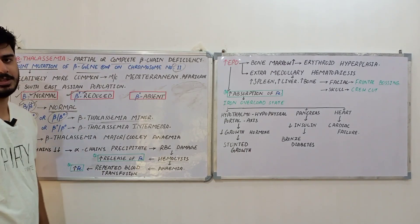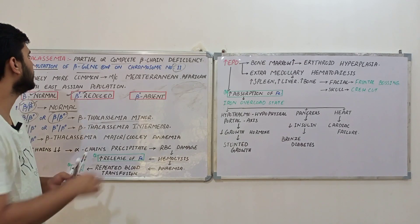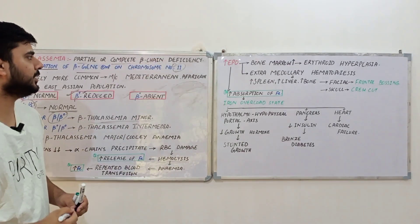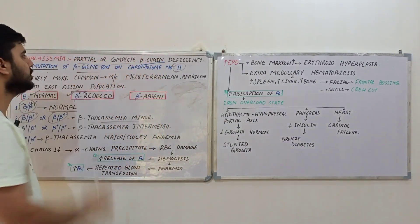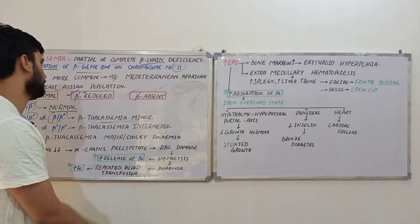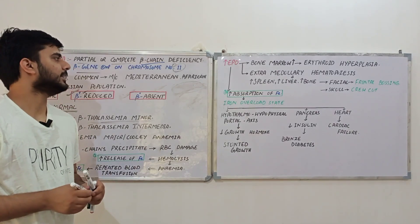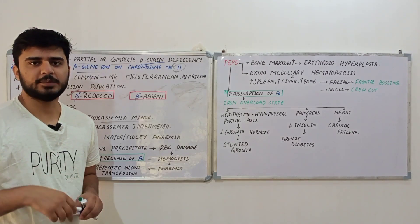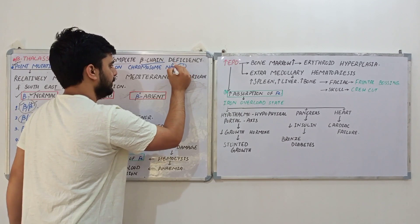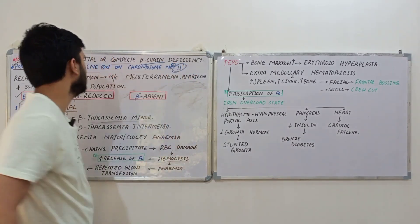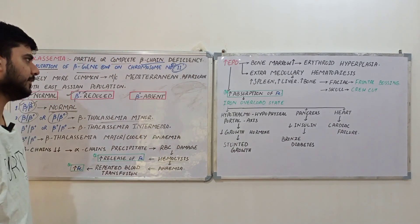Now, what is beta thalassemia? Beta thalassemia is a clinical condition in which we have either the partial or complete absence of beta genes. The reason behind this is point mutation of beta genes, which are located on chromosome number 11. This is an important point — there is point mutation of beta genes present on chromosome number 11.